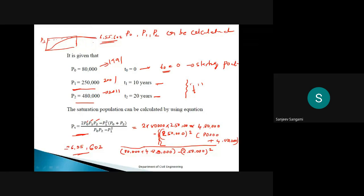The saturation population of 6,55,602 means the city's population will eventually stabilize at that level. Beyond that point, no further increase occurs. At saturation, the birth rate equals the death rate — if 10 people are born, 10 die — so population neither increases nor decreases. Migrations also stop. This is what saturation population means.